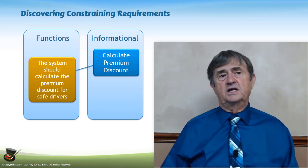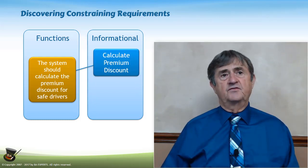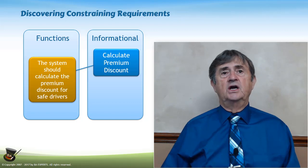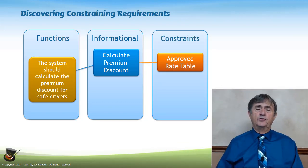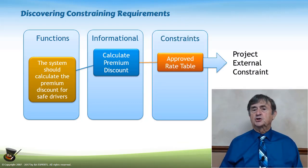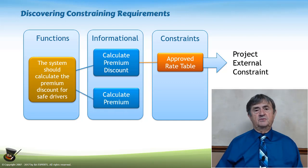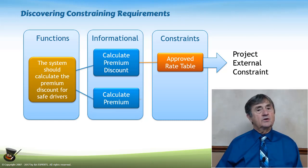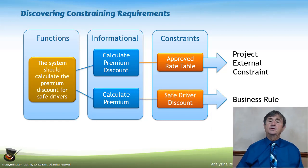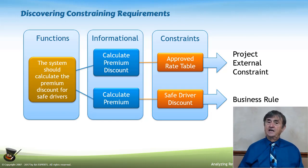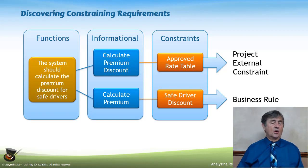If we look inside that statement, we identify that there's a function of calculating premium discount that is subject to a constraint that we have an approved rate table. That's a project external constraint because the rate table has to be approved by the State Insurance Board to be effective. We have another function required for this statement, and that is calculate the premium, and we're trying to get to a safe driver discount, which is governed by a business rule. A business rule is an internally mandated constraint, meaning someone in the organization has the authority to change what that safe driver discount is or when it applies.